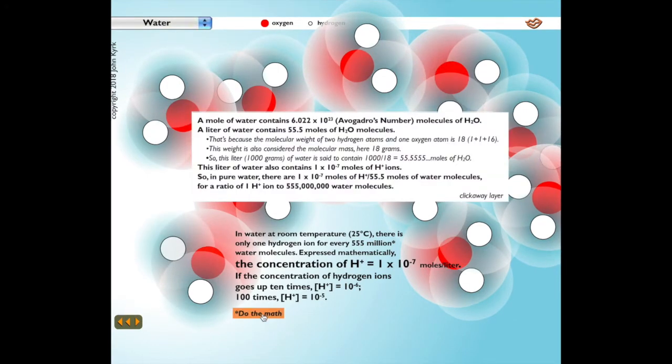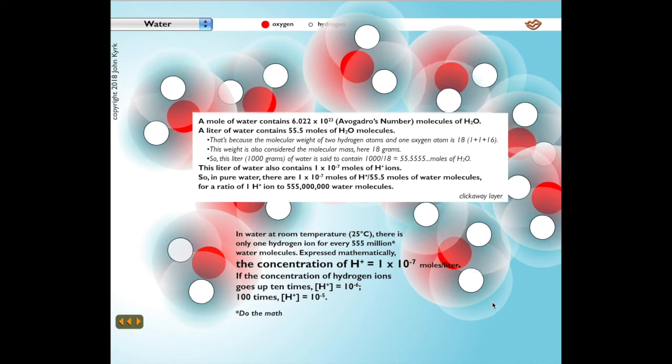Let's do the math. A mole of water contains 6.022 times 10 to the 23rd molecules of water. A liter of water contains 55.5 moles of water molecules. That's because the molecular weight of two hydrogen atoms and one oxygen atom is 18. This weight is also considered the molecular mass, hence 18 grams. So this liter, 1,000 grams of water, is said to contain 1,000 divided by 18, or 55.5555 moles of water. This liter also contains 1 times 10 to the minus 7th moles of hydrogen ions. So in pure water, there are 1 times 10 to the minus 7th moles of hydrogen ions per 55 moles of water molecules, for a ratio of 1 hydrogen ion to 555 million water molecules.